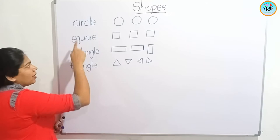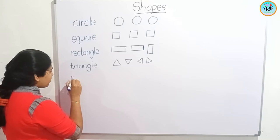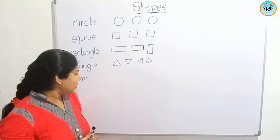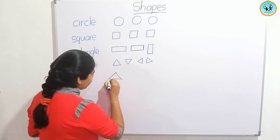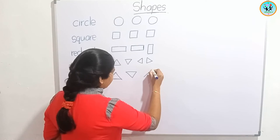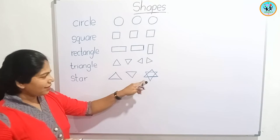We have drawn circle, square, rectangle, and triangle. Now we can draw a star. Before drawing a star, I will draw two triangles like this. Now I am going to draw like this — the star is drawn.